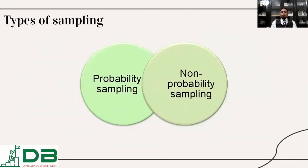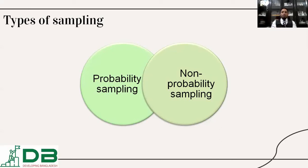Types of sampling: sampling techniques can be classified into probability sampling and non-probability sampling. Probability sampling is the technique where each and every individual of the respondents has an equal opportunity to be selected as a sample. Non-probability sampling is the technique where we determine some criteria, and individuals who do not meet the selected criteria will be excluded from the sample.